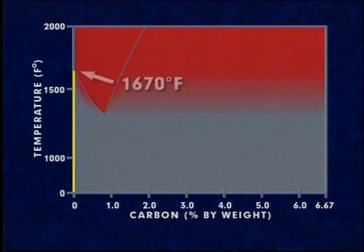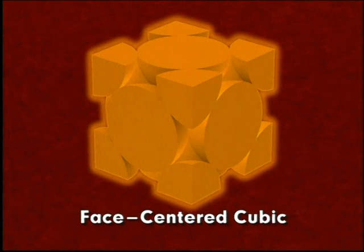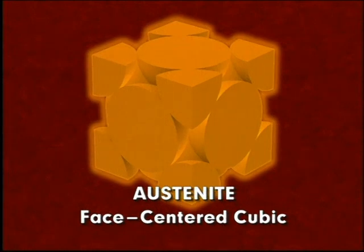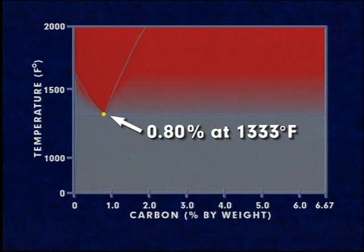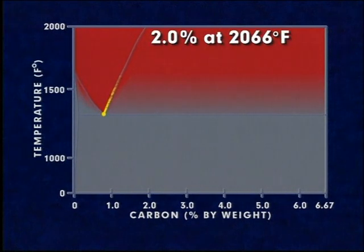When heated to 1,670 degrees Fahrenheit, ferrite's body-centered cubic crystal structure rearranges itself into a face-centered cubic structure, known as austenite. This transformation to austenite is an important phase in the heat treatment of steels. Austenite's crystal structure allows it to absorb up to 0.80 percent of carbon at 1,333 degrees Fahrenheit, increasing to a maximum of 2.0 percent at 2,066 degrees Fahrenheit.